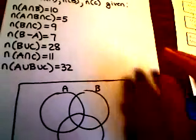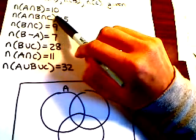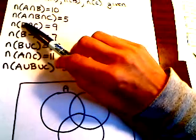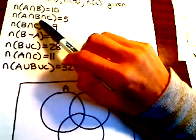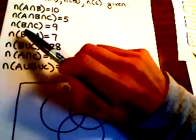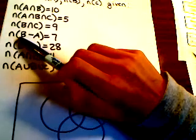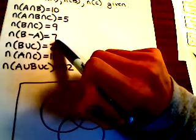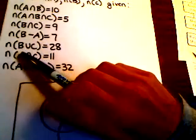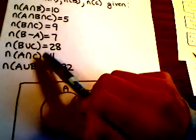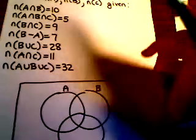Okay, so they're telling us that the number of elements in A intersect B is 10. The number of elements in A intersect B intersect C is 5. The number of elements in B intersect C is 9. The number of elements in B minus A is 7. The number of elements in B union C is 28. A intersect C is 11. And then the union of all three is 32.